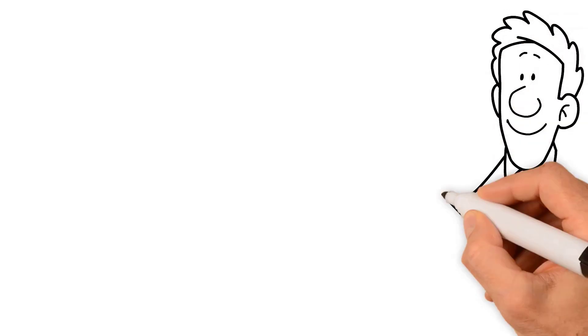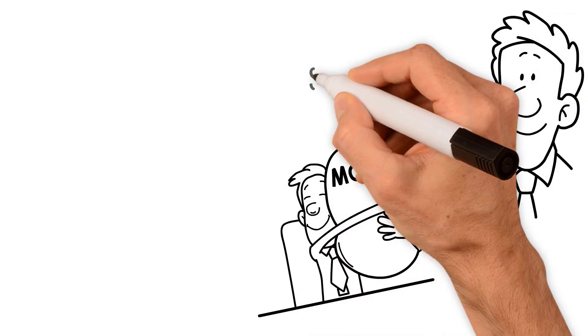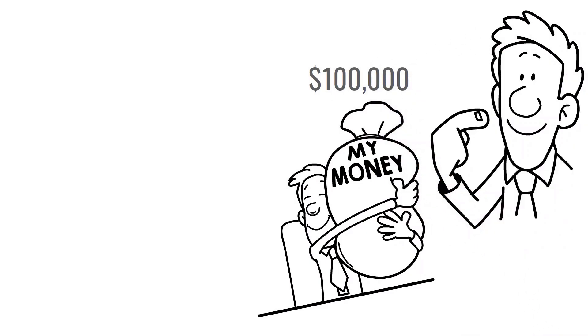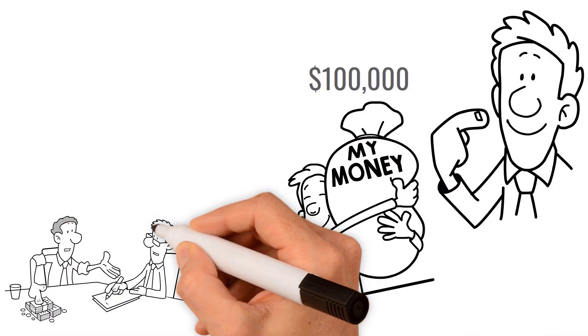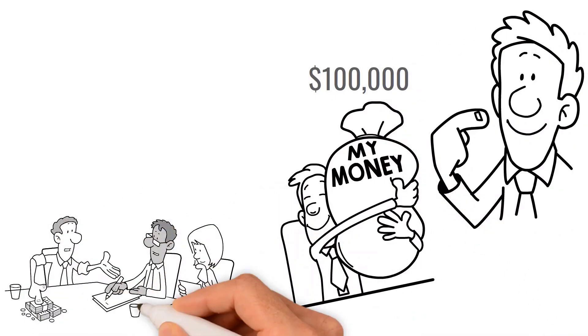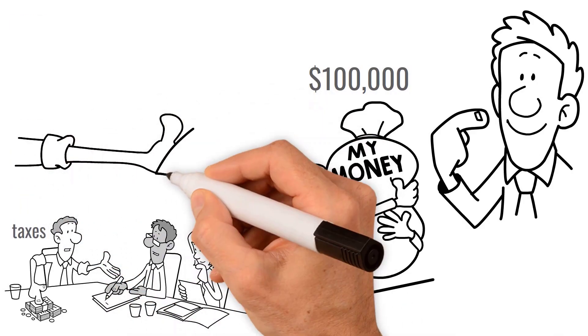Meet Bob. Bob is a hard-working W-2 employee who made $100,000 last year working for XYZ Corporation. Like most people, Bob sets aside money from each paycheck to pay his taxes. This money is commonly referred to as paycheck withholdings.